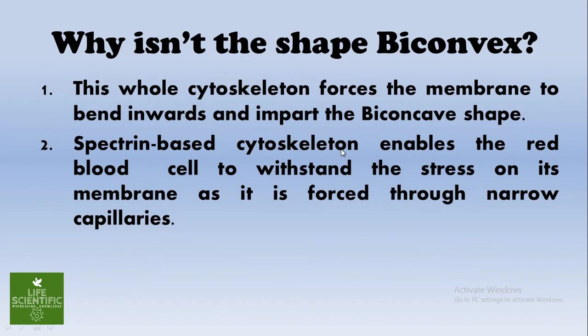The spectrin-based cytoskeleton enables the red blood cell to withstand the stress on its membrane as it is forced through narrow capillaries. Blood moves through narrow capillaries reaching out to cells, and the blood cells withstand a huge amount of stress. If there was no biconcave shape, this stress would be maximum and the blood cells would rupture.